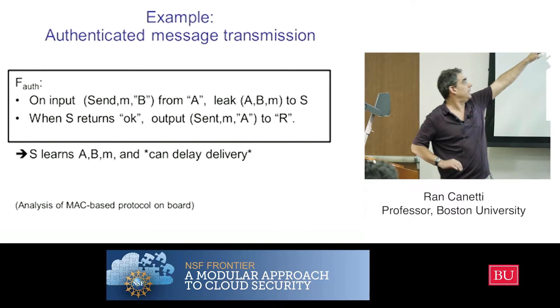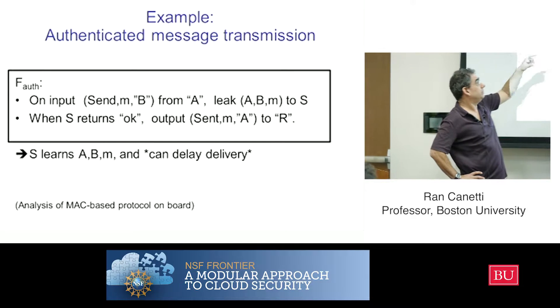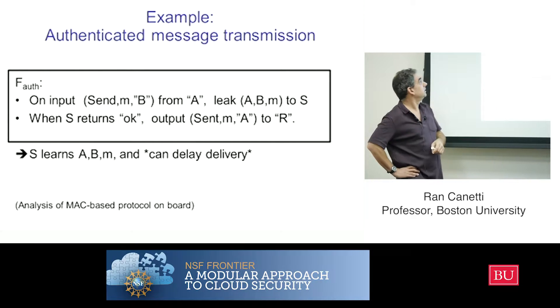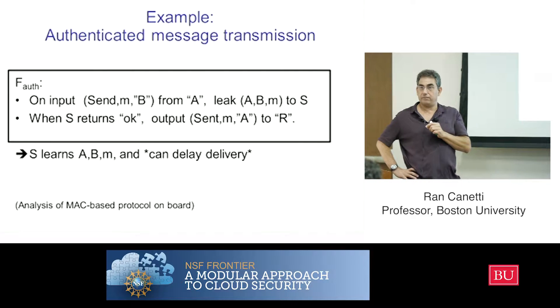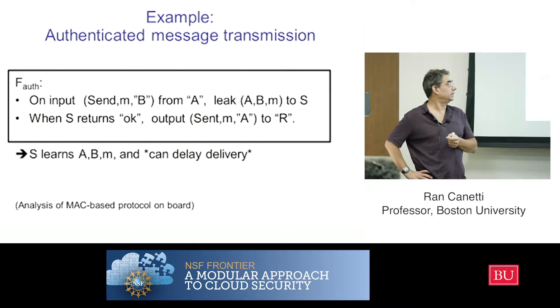So on input send M to B from A, I'm going to leak or send A, B, and M, not just M, also the identity of the parties to S. I'm going to send it to S. And furthermore, I'm not going to do anything further until S sends okay.